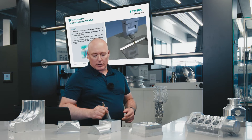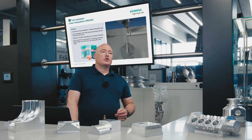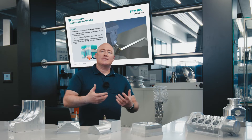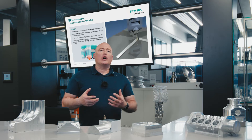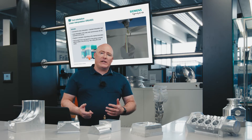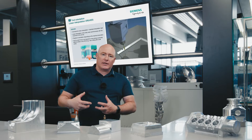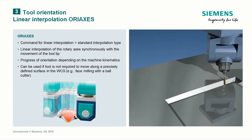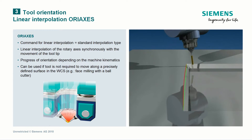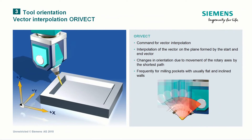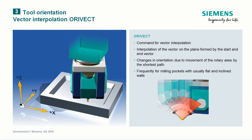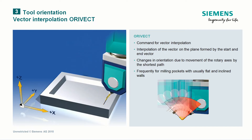After five-axis transformation by the TRAORI command has been activated, there are various ways of orienting the tool. One is the command ORIAXES — the command for linear interpolation, also called standard interpolation — used when it is not necessary for the tool to move along a precisely defined surface. A further command is ORIVECT, the command for vector interpolation, frequently used for milling pockets with flat and inclined walls.